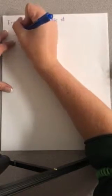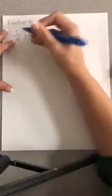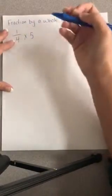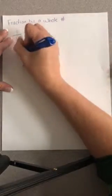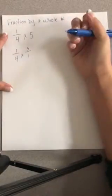So an equation I'm going to do is 1/4 times 5. So I have a fraction and a whole number. The first thing I'm going to do is I'm going to rewrite this, and I'm going to change this whole number to a fraction by adding a 1 underneath it.